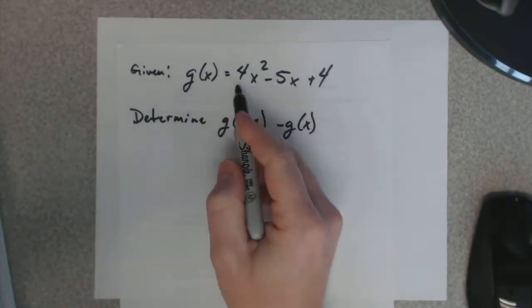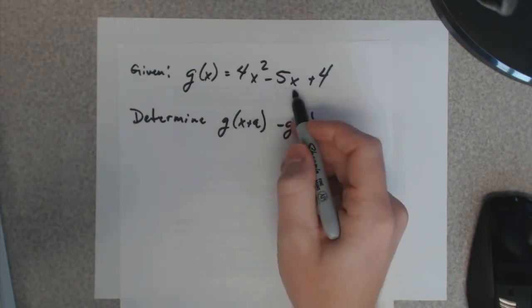Let's do another example. g of x equals 4x squared minus 5x plus 4.